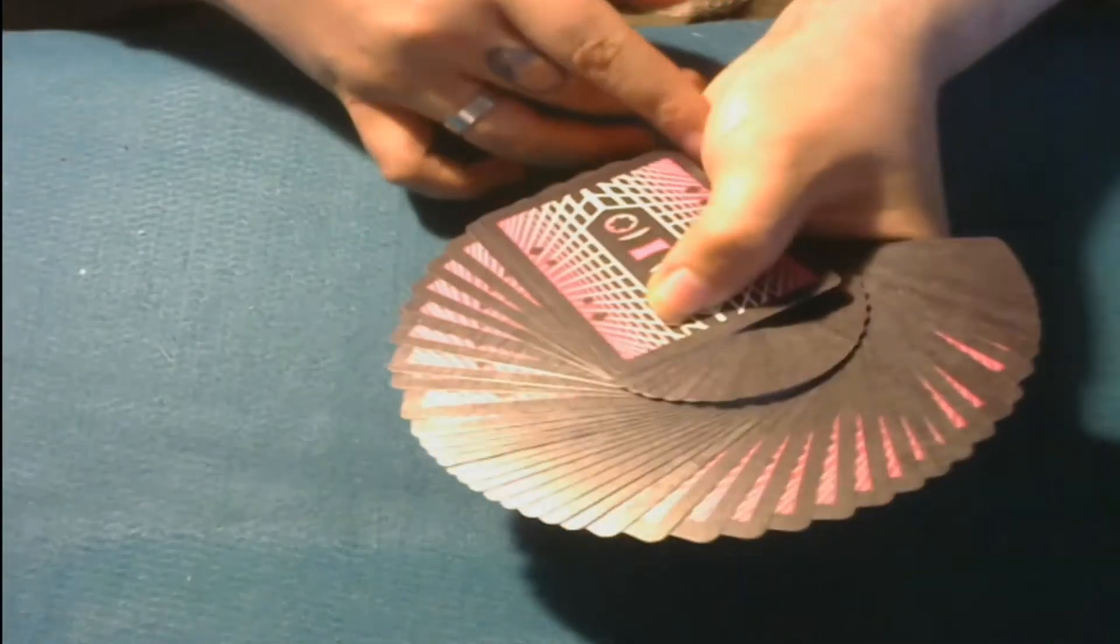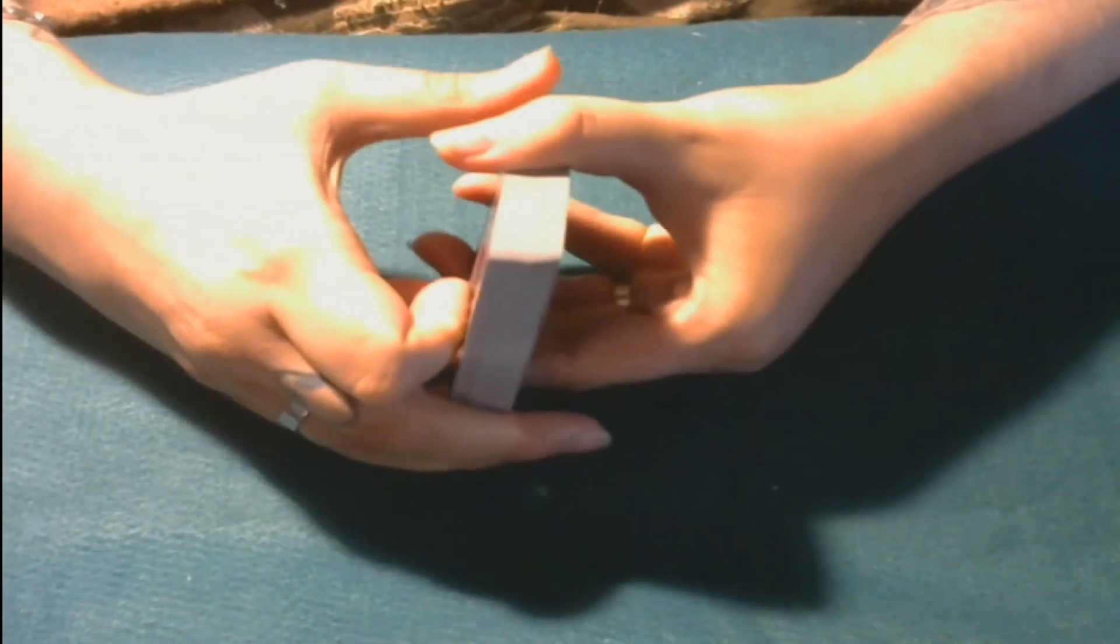Spreads real nice. Obviously, all bicycle decks are going to handle pretty much the exact same as any other bicycle deck that you get. Except for the ones that have a lot of ink on them. Those are going to handle a little bit different when they first come out. Because of the ink on the cards, it makes it hard to do certain things until you actually break them in. So I'm going to break these in for a second. And we'll see how they handle after we break them in.